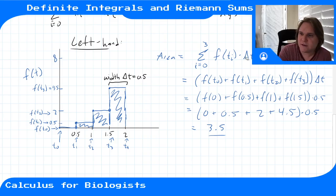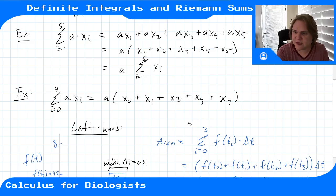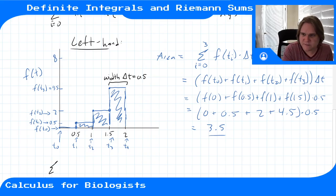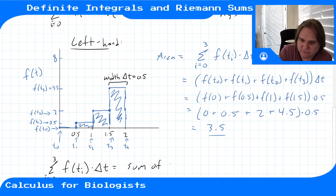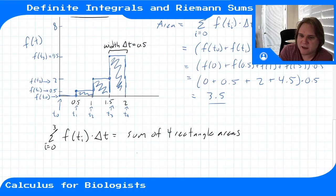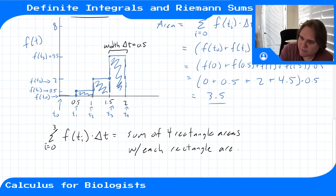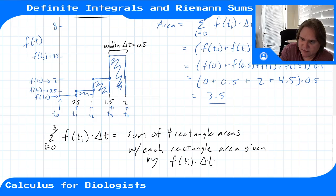We can think about this formula in plain English: the sum from i equals 0 to 3 of f(t_i) times delta t is the sum of the four rectangle areas, where each rectangle's area is given by f(t_i) times delta t — height times width, just the area of a box.